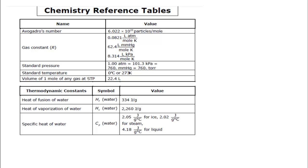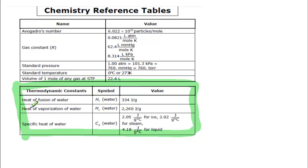I want to start by looking at your reference table and showing you what you're going to need to use for this. This is the very first page of your reference packet. If we look right here, we have thermodynamic constants: heat of fusion for water, heat of vaporization for water, and specific heat for water. These are the constants that you're going to use in your formulas.